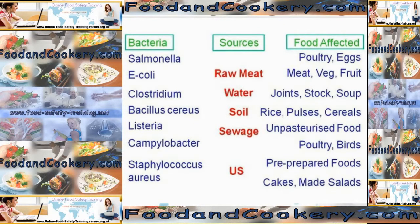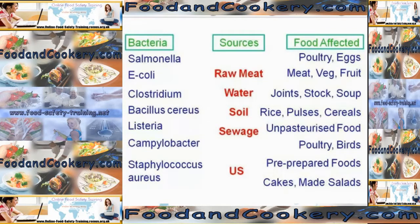E. coli you tend to find in meat, vegetables and fruit. With meat, you tend to find it because of unsanitary conditions in abattoirs, where faecal and intestinal spillage goes onto clean meat which is then sent to butchers and supermarkets. Vegetables with soil contamination will have E. coli, so if you're going to use vegetables raw, make sure you wash them well. If the vegetable is going to be cooked, that's not a problem because cooking will kill the bacteria.